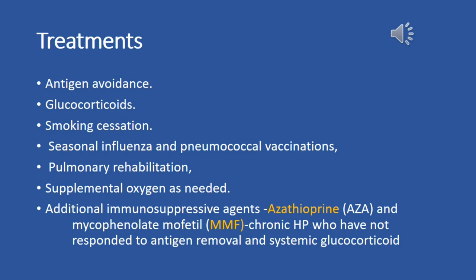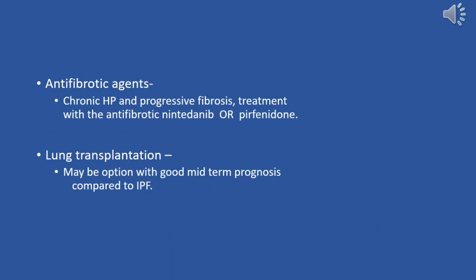In cases of chronic hypersensitivity pneumonitis that have not responded to antigen avoidance and systemic glucocorticoids, additional immunosuppressive agents such as azathioprine, AZA, and mycophenolate mofetil, MMF, may be considered. Antifibrotic agents, such as nintedanib or pirfenidone, may be considered for chronic HP with progressive fibrosis to slow progression and preserve lung function.